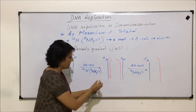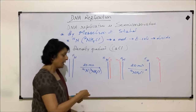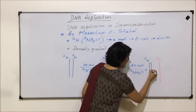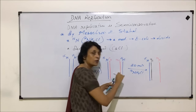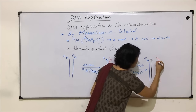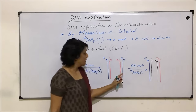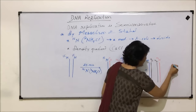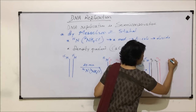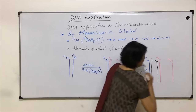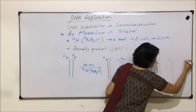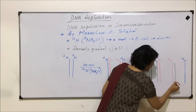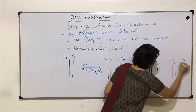If these bacteria are allowed to multiply one more time — another 20 minutes in the same N14-containing NH4Cl medium — these two hybrid strands separate. One strand contains N15 (coming from the original parent bacteria) and the red one, the newly synthesized strand, contains N14. New DNA synthesized on both strands will again incorporate N14, since that is the only nitrogen available. So the same pattern follows: both new molecules again get one old strand and one new N14 strand.